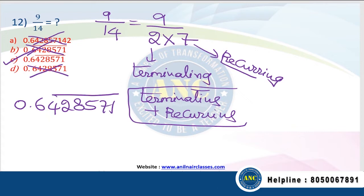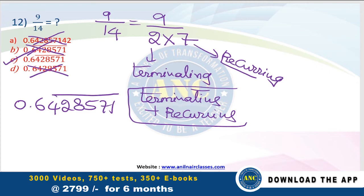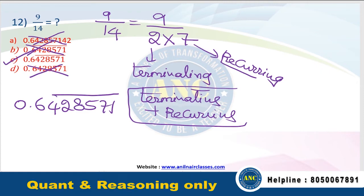First one, it is only terminating. Last one, it is only terminating. B, it is only recurring. So the only option left is C. Are you all with me? This is the beauty of the concepts.